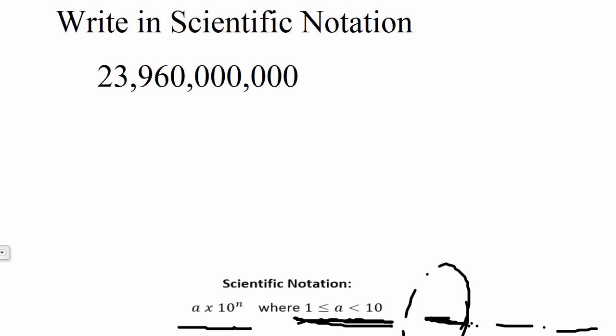So what we need to do in order to put a number in scientific notation is this. Step one, move the decimal until we have a number that is greater than or equal to 1 but less than 10.